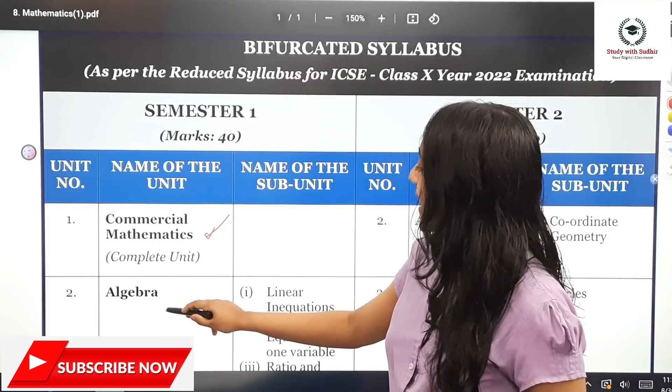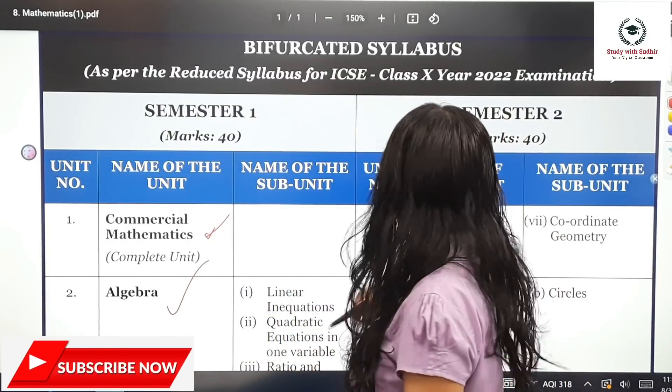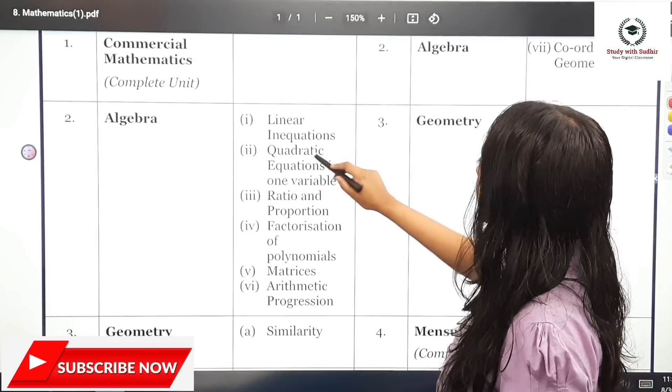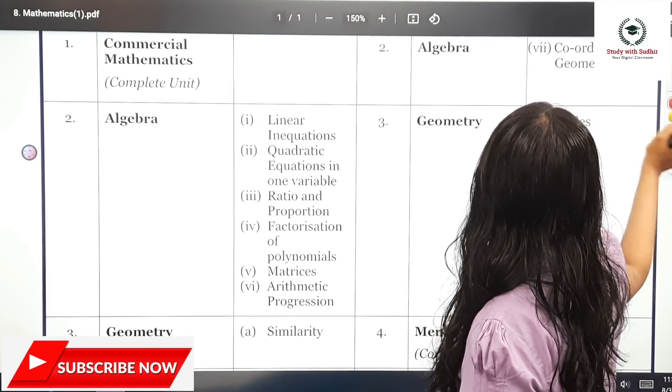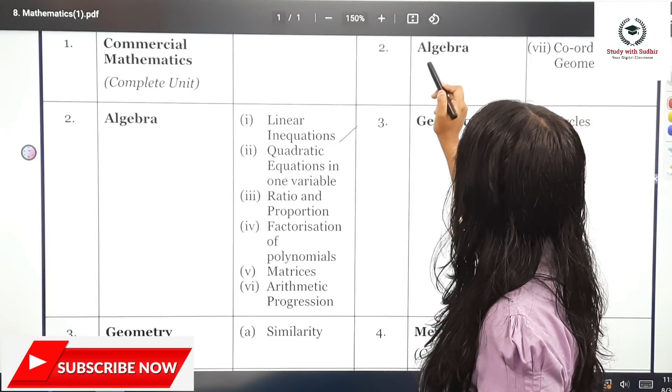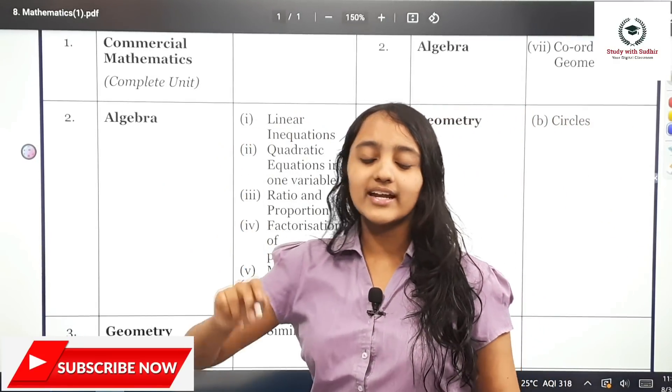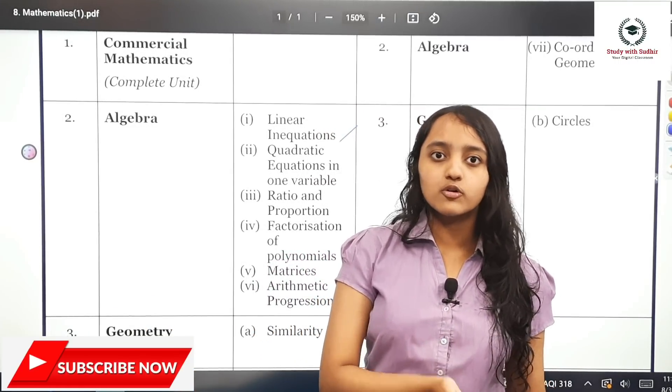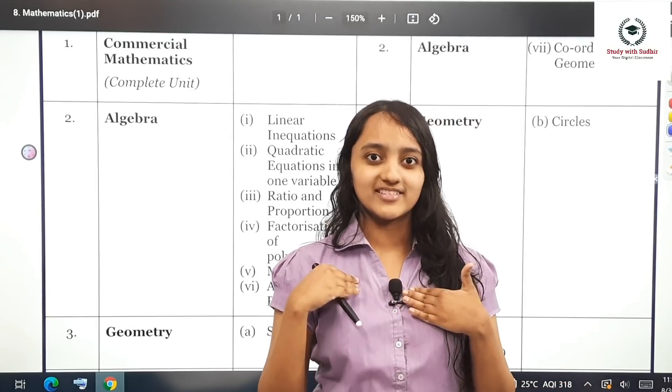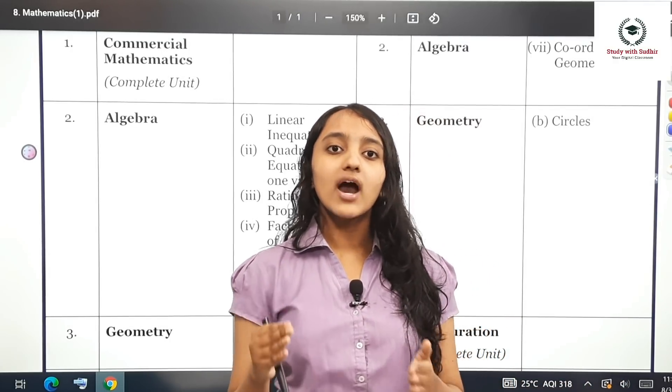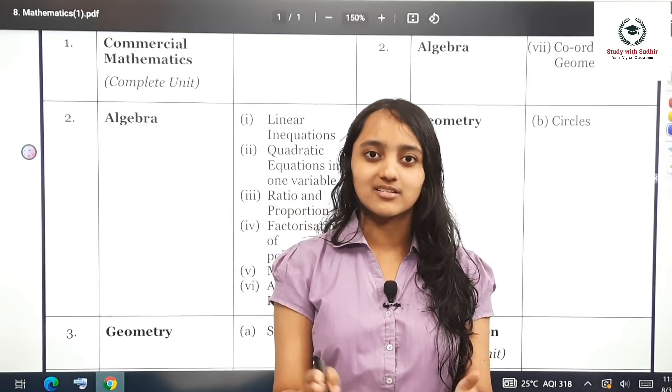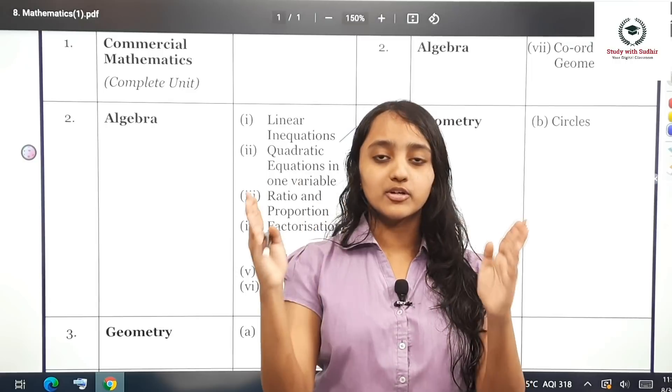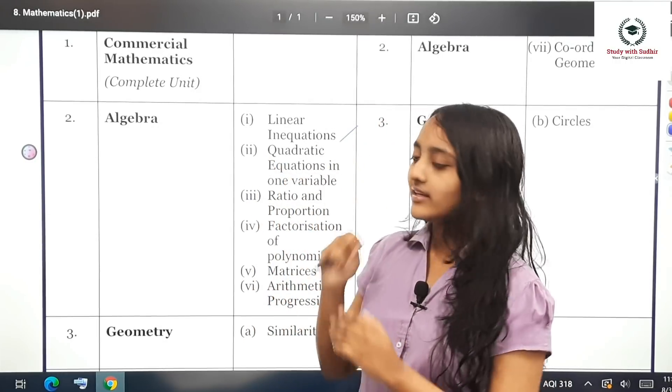The next unit is algebra. Algebra is a lot of fun and has many chapters included in it. The first chapter is linear inequations, which you will be doing later in 11th and 12th as well. Now you only need to know how to interpret the number lines for the chapter of linear inequations.